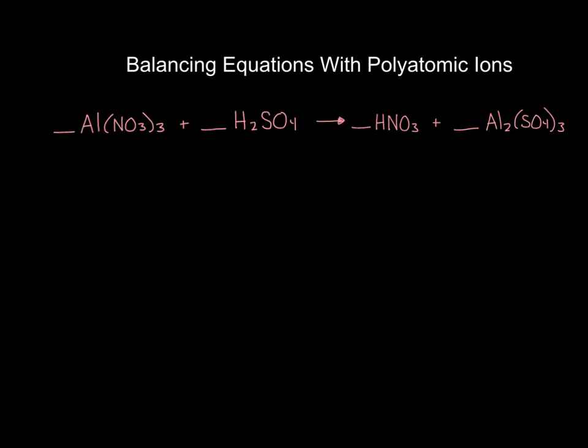If a chemical equation has the same polyatomics on both sides of the arrow, you can balance the equation by balancing the ions. The first thing you'll want to do anytime you notice that you have a polyatomic is check to see if the polyatomics are intact on both the reactant and product side. In this first example, nitrate is present in aluminum nitrate and also in nitric acid. Sulfate is present in sulfuric acid and also in aluminum sulfate. We can use a shortcut by keeping the polyatomics as one single unit.